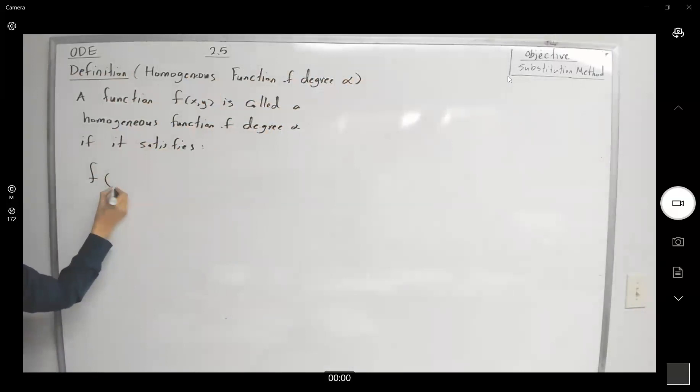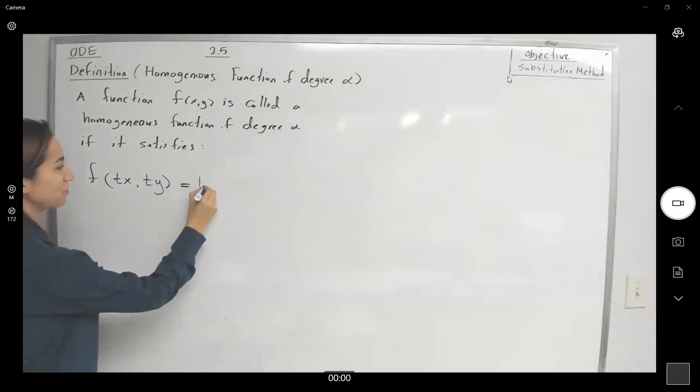f(tx, ty) - so if you substitute x by tx, y by ty, then you can get t to the power alpha back from that definition. So we are writing it as f(tx, ty), it gives us back t to the power alpha multiplied by the function itself.